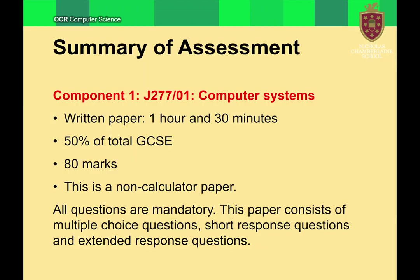Component 1 is a written, non-calculated paper. It contains lots of different theoretical parts of computer science, such as systems architecture, memory and storage, data and representation, conversion into binary, networking, system security and software, and ethical, legal, cultural and environmental issues as well.